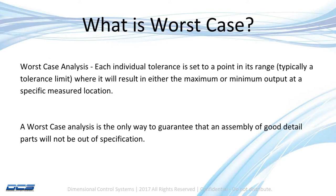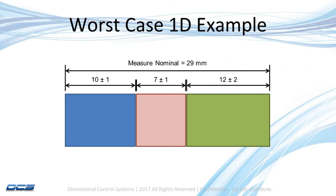Now what does that look like? In one dimension, if I just have these three blocks — I have a blue block, a red block, and a green block — the blue block has a 10 plus or minus 1 dimension, the red block 7 plus or minus 1, and the green block has 12 plus or minus 2. So at nominal, if I measured all those up, that adds up to 29 millimeters.